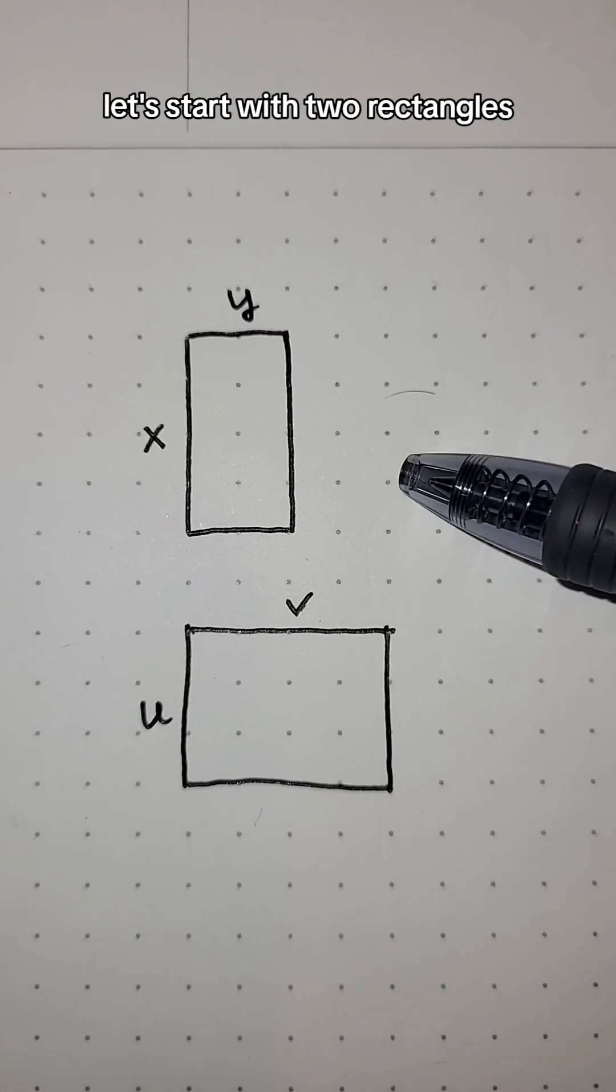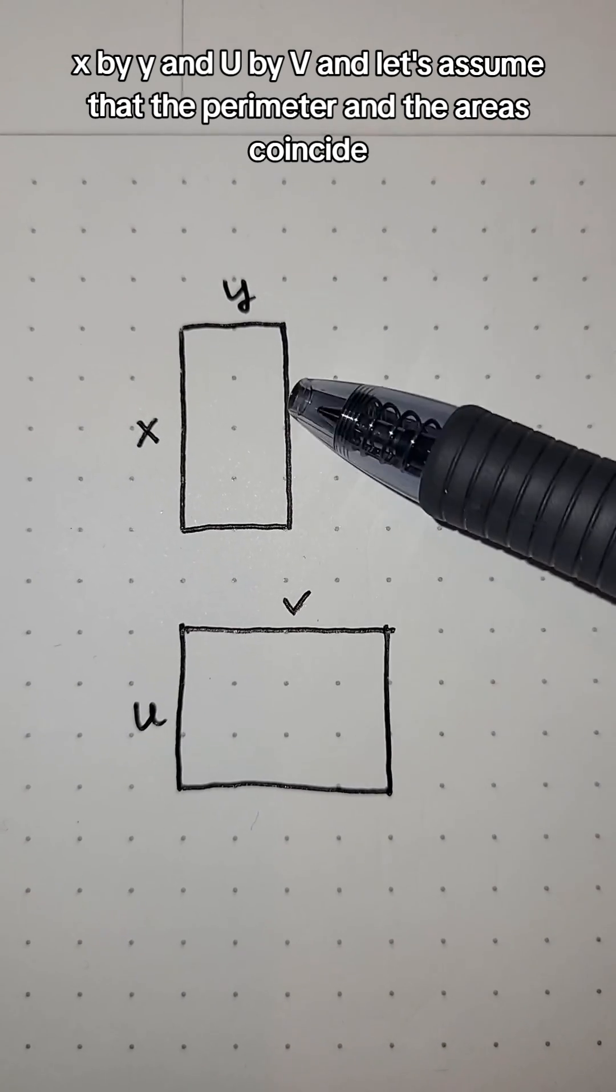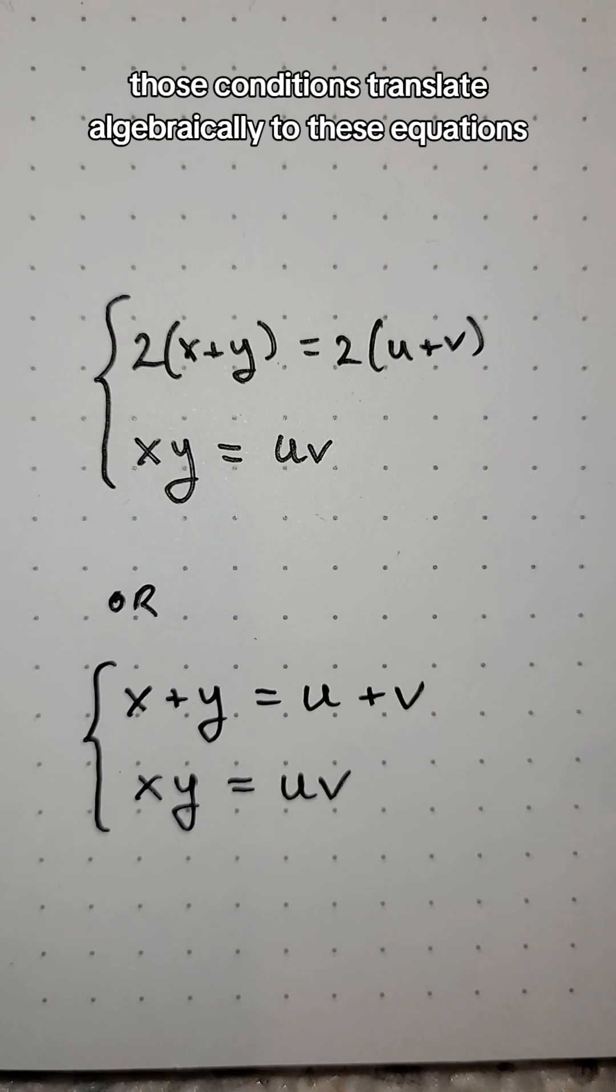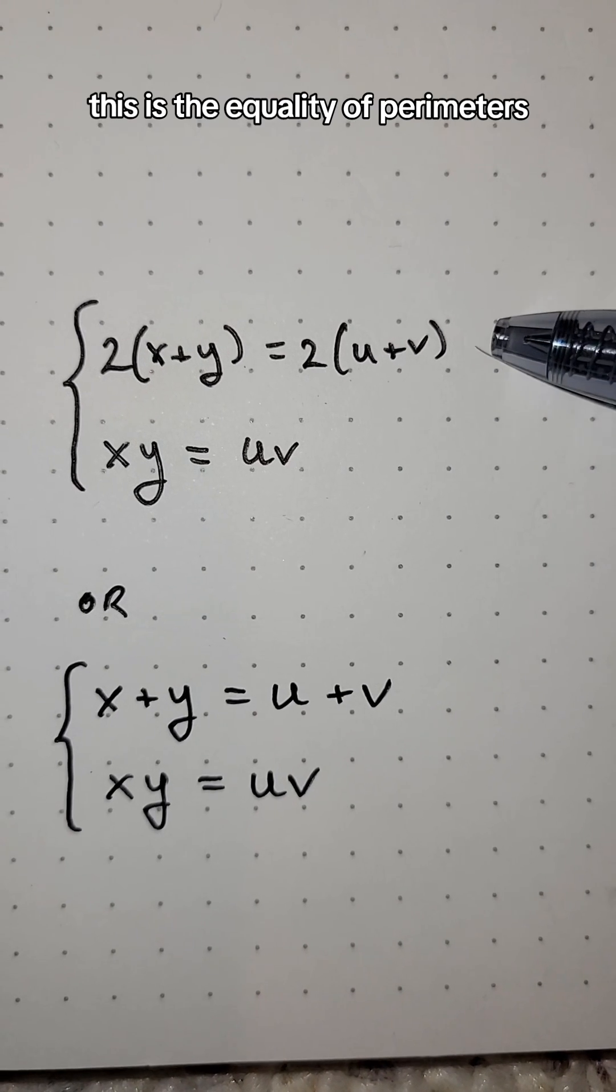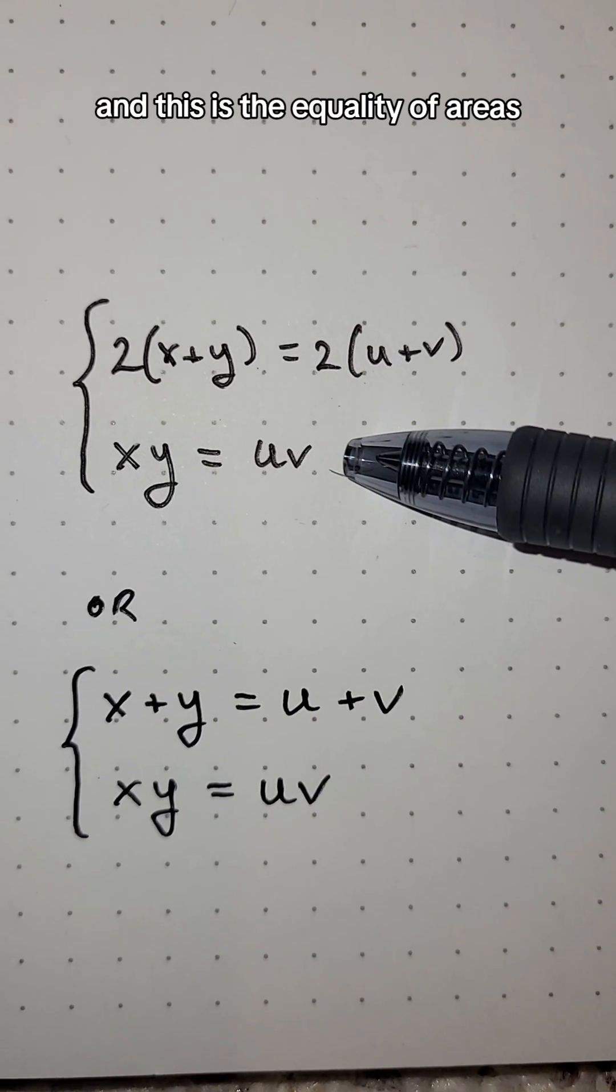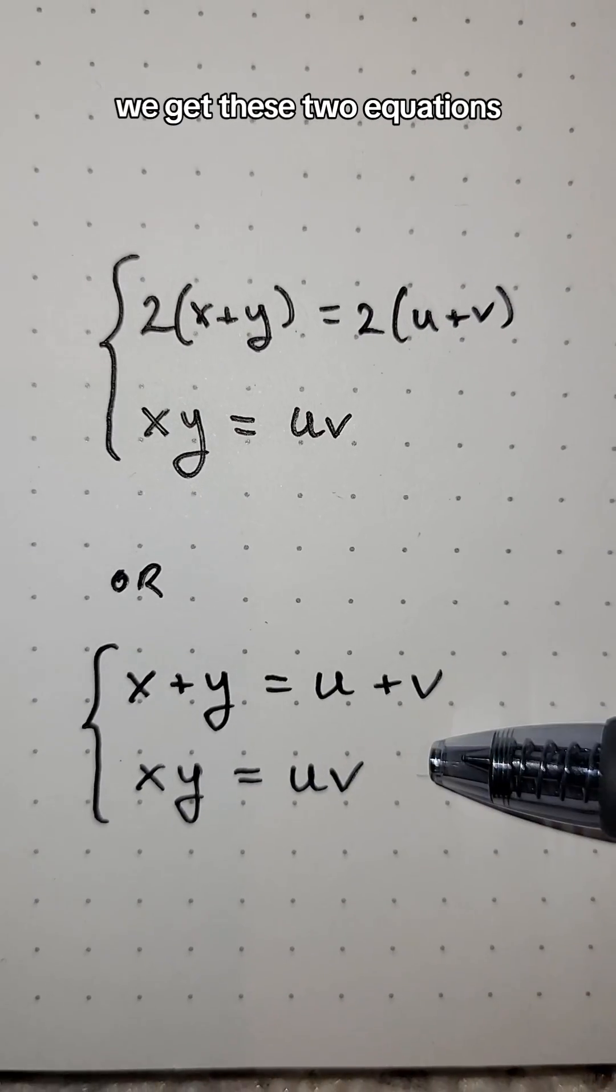Let's start with two rectangles, x by y and u by v, and let's assume that the perimeter and the areas coincide. Those conditions translate algebraically to these equations. This is the equality of parameters, and this is the equality of areas, and if we cancel the twos, we get these two equations.